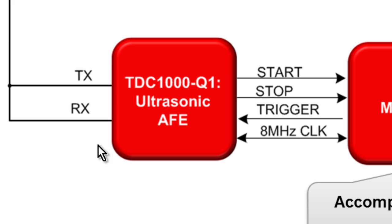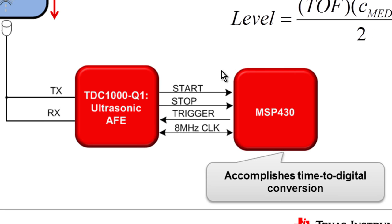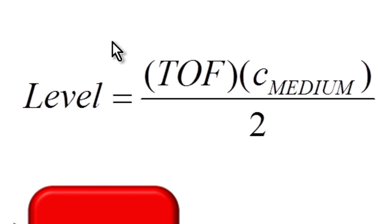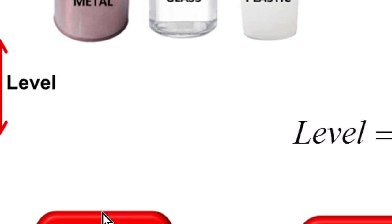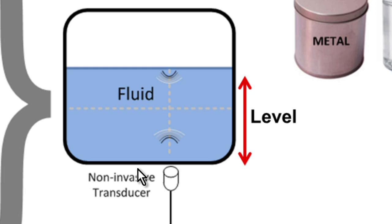The TDC1000, connected to an MSP430 or some other microprocessor, can then convert that into a time-of-flight calculation. With that time-of-flight information and the speed of sound of my medium, I can then determine the level or the height of that fluid in that container.